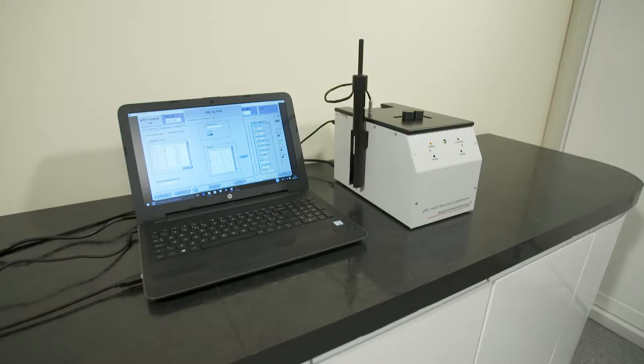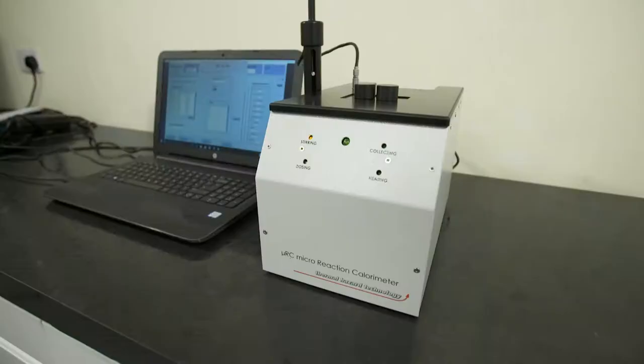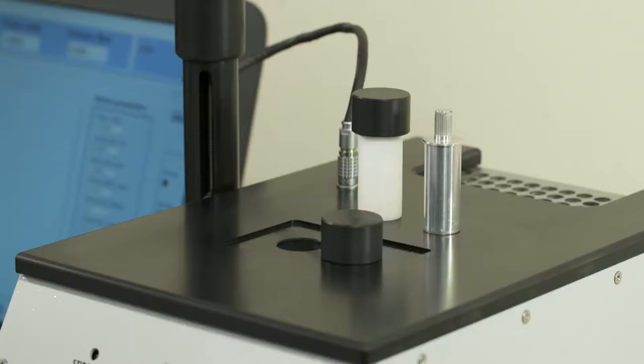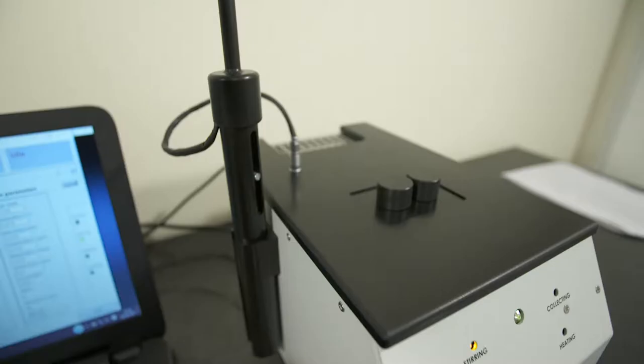The URC Micro Reaction Calorimeter is a multi-function power compensation calorimeter. It offers isothermal, scanning and titration calorimetry all in one instrument with disposable 1.5 milliliter glass vials.